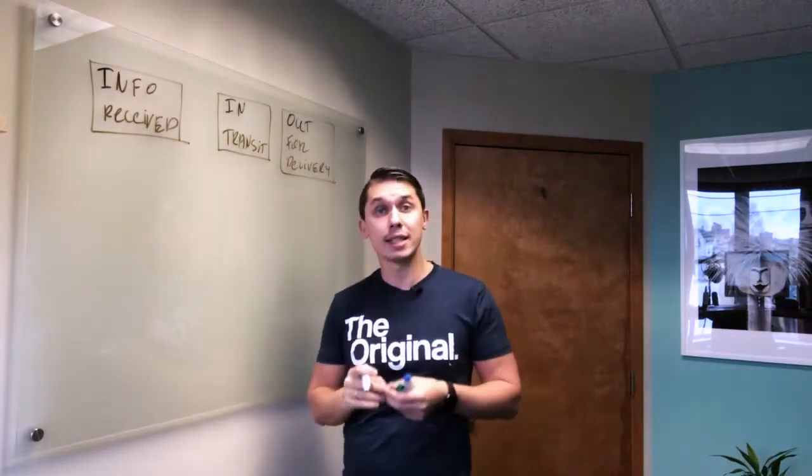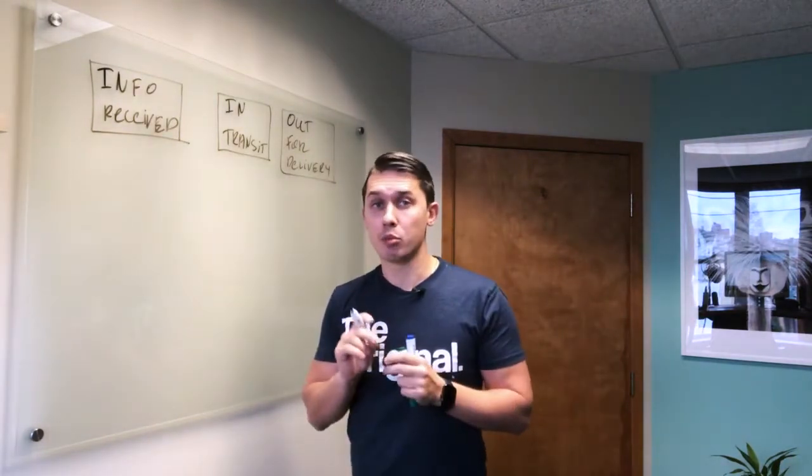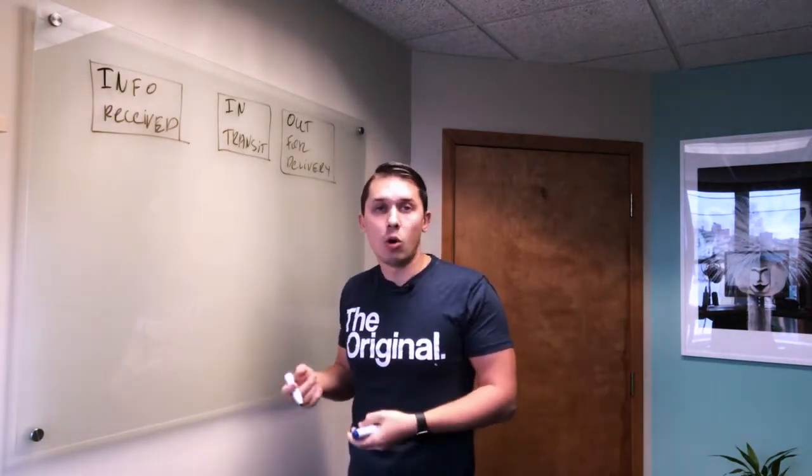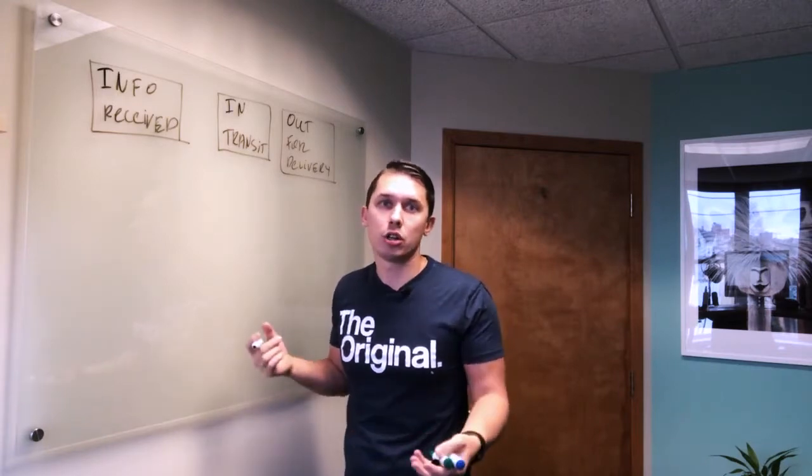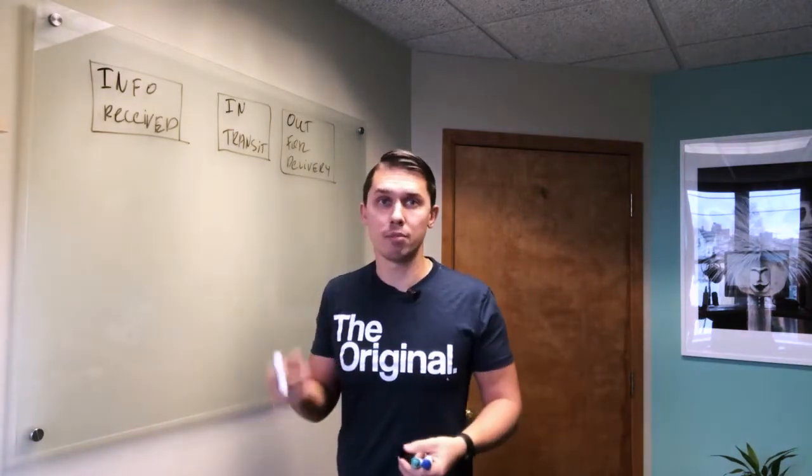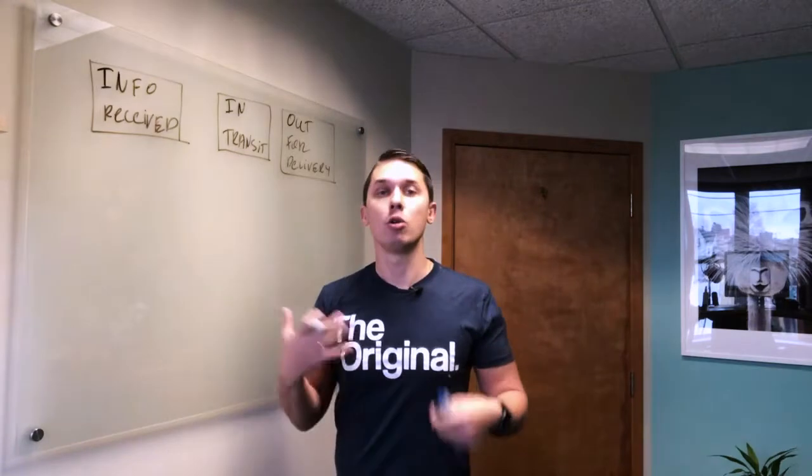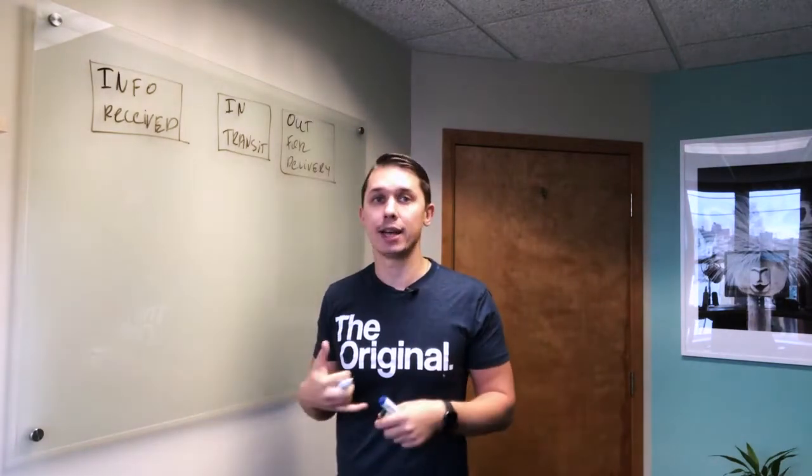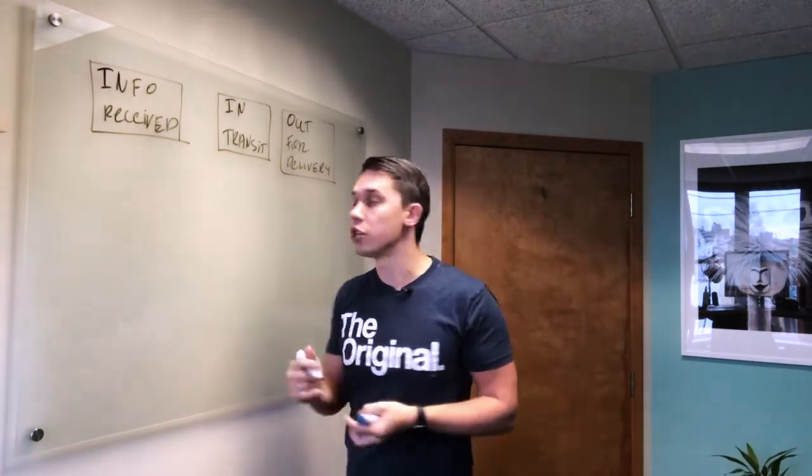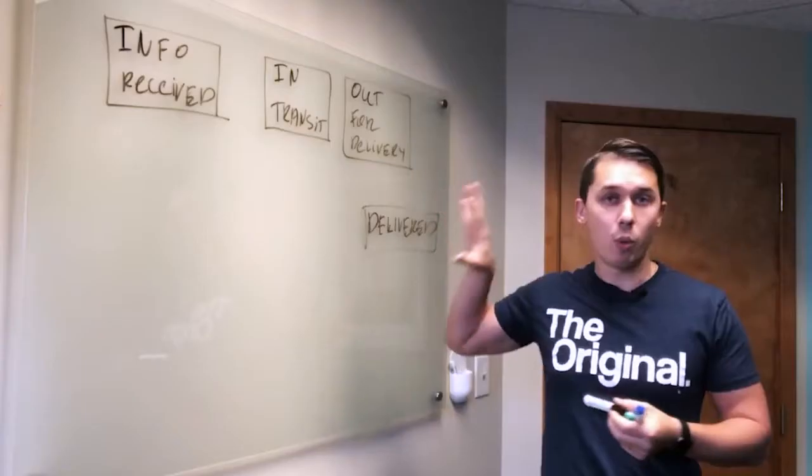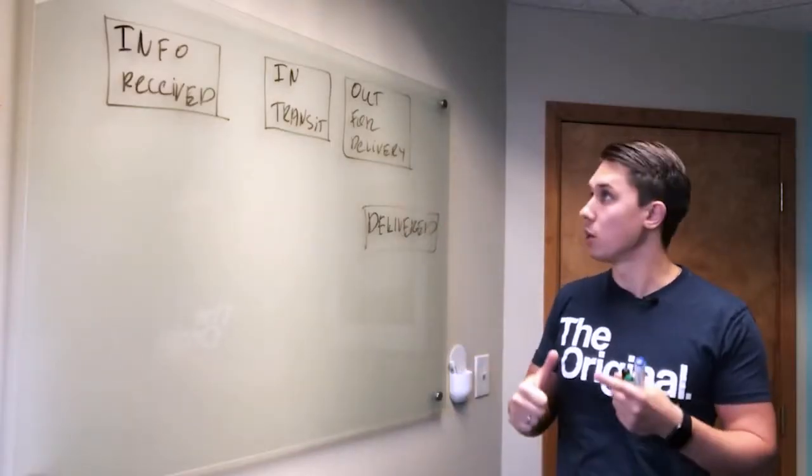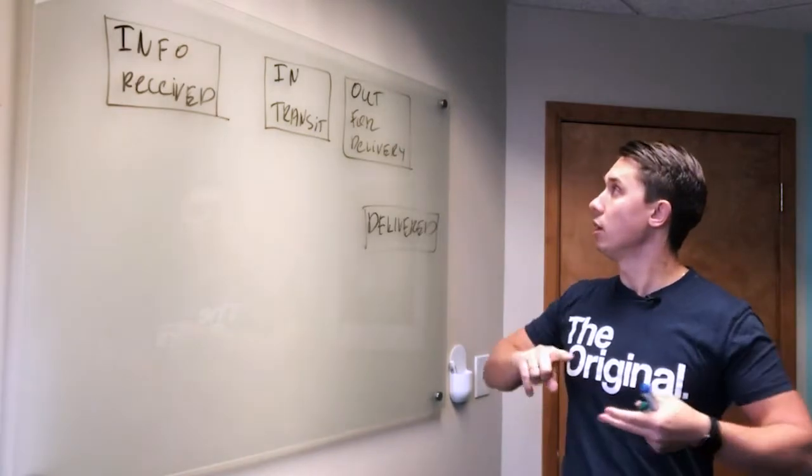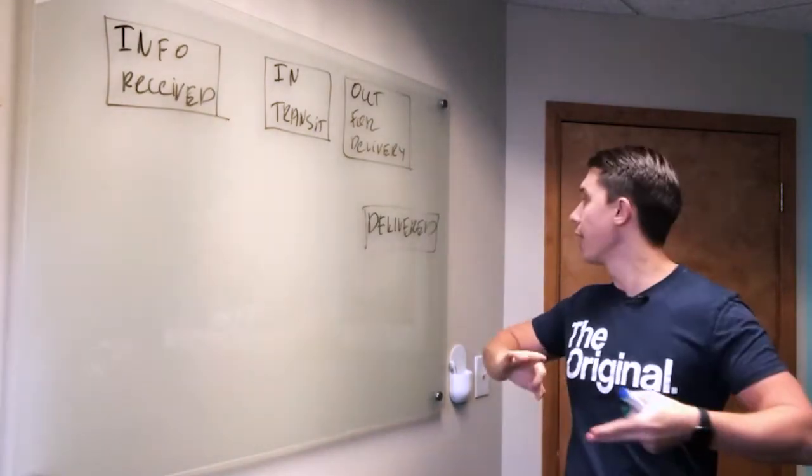And the final status is delivered. Delivered is also very important status because if you're not at home or let's say you're not sure where the package was lost, but in the system it says delivered, the customer can contact you and try to resolve the issue. So we have those four statuses: info received, in transit, out for delivery and delivered.